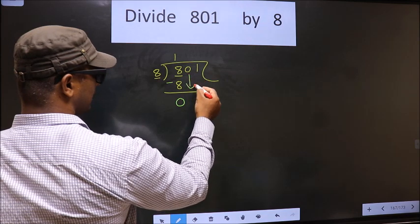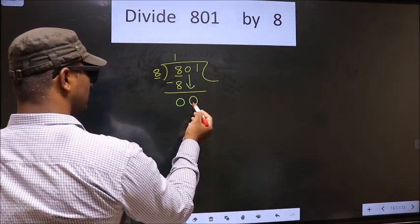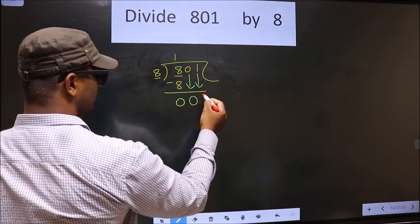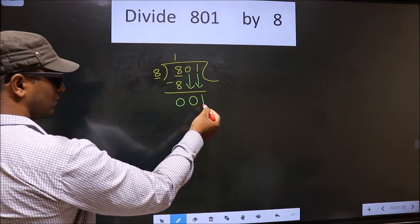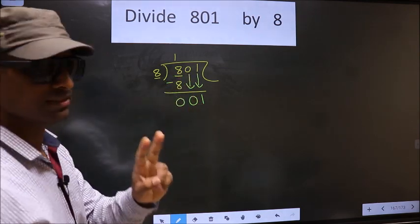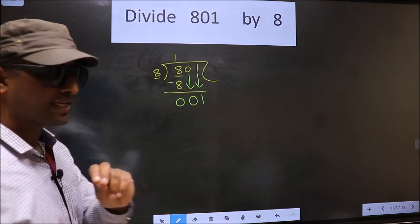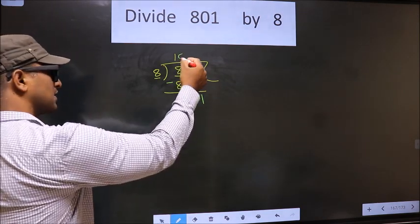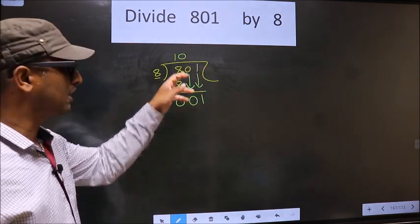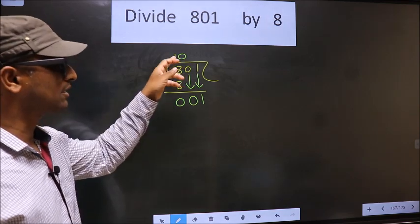Now you bring down the other number. So 0 down. Now 0 is smaller than 8, so we should bring down the other number. So 1 down. Over here, you brought down 2 numbers. Whenever you brought down 2 numbers, then compulsory put 0 in the quotient. I repeat. Whenever you brought down 2 numbers, then compulsory put 0 in the quotient.